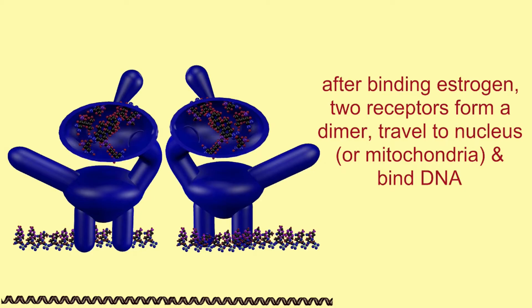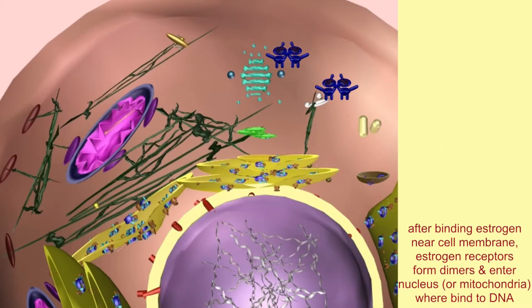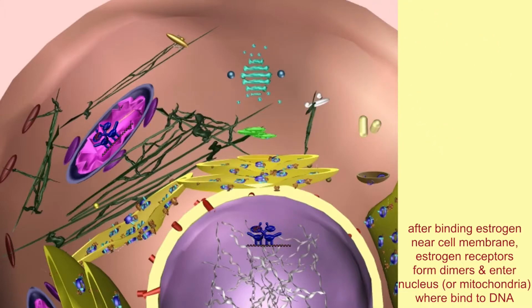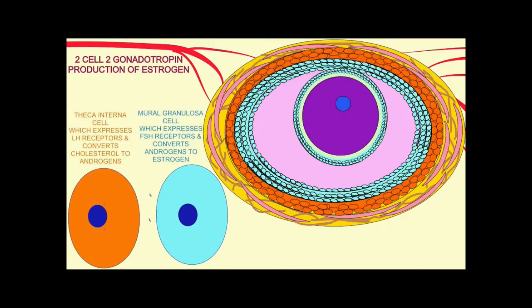Typically, these two receptors have comparable effects when estrogen binds them, but there are examples where estrogen binding to the beta receptor has an opposite reaction compared to binding to the alpha receptor. Here you can see cells of the ovary involved in reproductive function. These cells have estrogen receptors, but which estrogen receptors they express can vary.